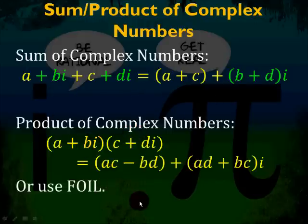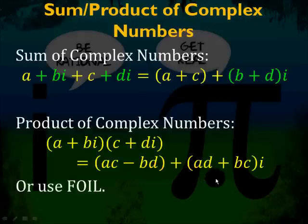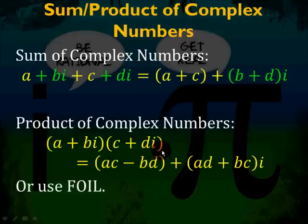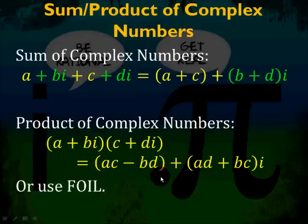The sum of complex numbers: when you're adding complex numbers together, you add the real parts together and the pure imaginary parts together. So a plus bi plus c plus di equals a plus c, the real parts, plus b plus d times i. To multiply complex numbers, a plus bi times c plus di, you can use the formula ac minus bd plus ad plus bc times i. This is hard to remember, so you can always fall back on using FOIL.